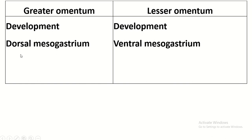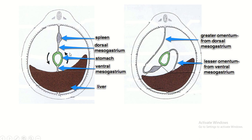The greater omentum develops from the dorsal mesogastrium and the lesser omentum develops from the ventral mesogastrium. This is the liver, stomach, and spleen. This fold of peritoneum situated in front of the stomach is known as the ventral mesogastrium. Behind the stomach, this peritoneal fold is known as the dorsal mesogastrium. After the rotation of the stomach, the greater omentum is enlarged and it is developed from the dorsal mesogastrium, and the lesser omentum is derived from the ventral mesogastrium.